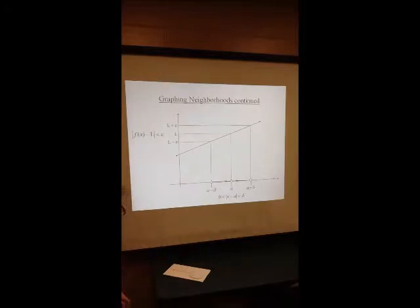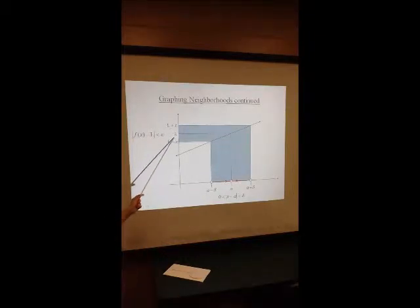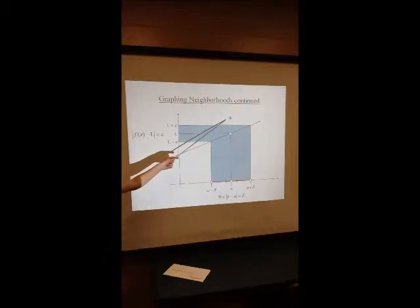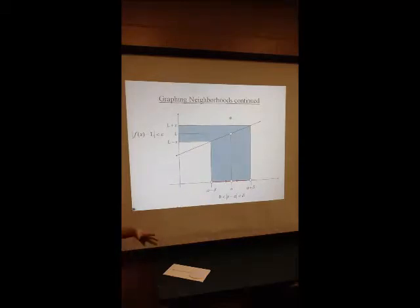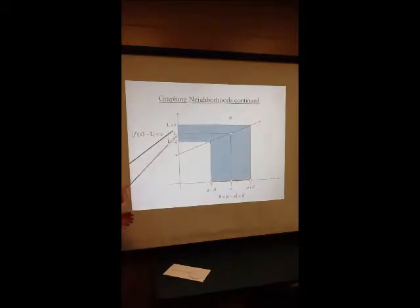As x gets closer and closer to the value of A from either direction, we expect the value of f of x to get closer and closer to the value of L. But what if at x equals A, f of x does not equal L and is actually equal to a value completely outside of the neighborhood? Again, just like in our example with Kate and Joe, we don't care what the value of f of x actually is — we just care about what we expect the value to be, which is L.